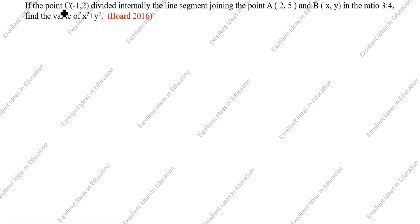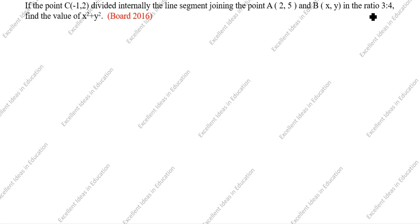If the point C(-1, 2) divides internally the line segment joining the points A(2, 5) and B(X, Y) in the ratio 3:4, find the value of X² + Y².